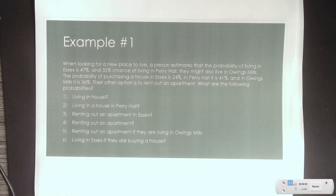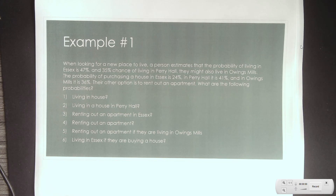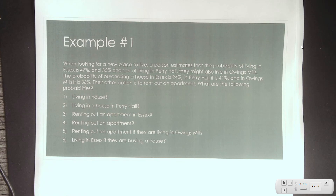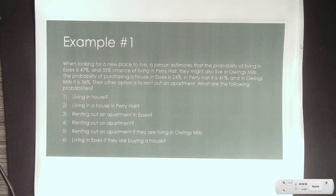These are three towns in the state I live in. When looking for a new place to live, a person estimates the probability of living in Essex is 47% and there's a 35% chance of living in Perry Hall. They might also live in Owings Mills. The probability of purchasing a house in Essex is 24%, in Perry Hall is 41%, and in Owings Mills is 36%. Their other option is to rent an apartment.